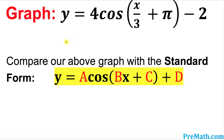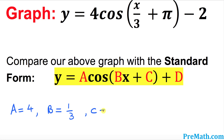The very first thing is to look at our original given function and our standard form to compare. By comparing the standard form with our given function we can see that a equals to four, b equals to one over three, c equals to pi, and finally d equals to negative two. That is our very first step.